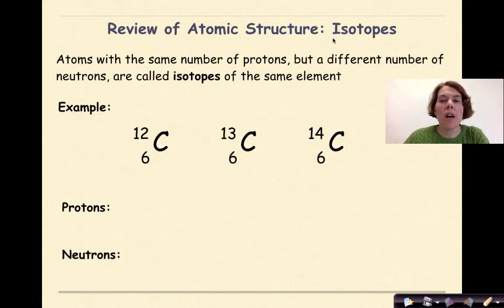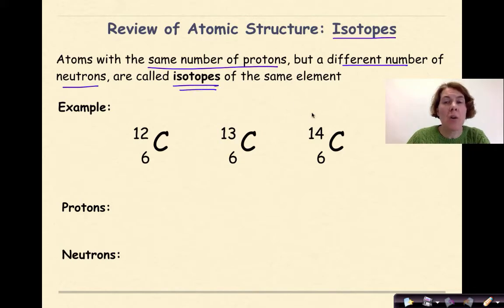Now let's do a little review of isotopes. Atoms with the same number of protons, but different number of neutrons, are called isotopes of that element. So here we have three isotopes of carbon. If I was to look at the first example, I'd say, all right, well the number of protons must be 6, because my atomic number is 6.